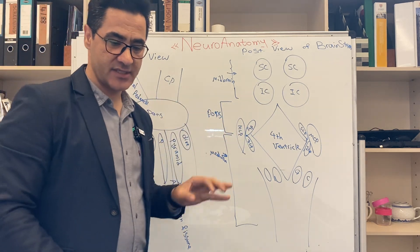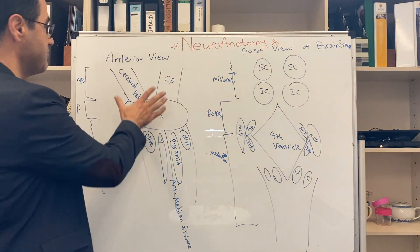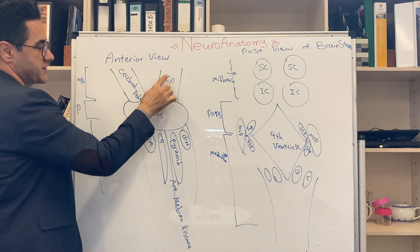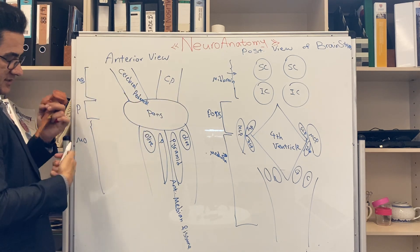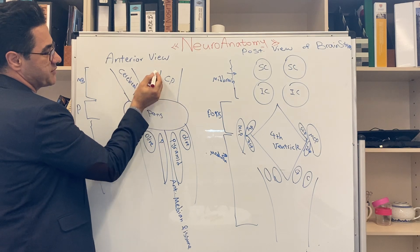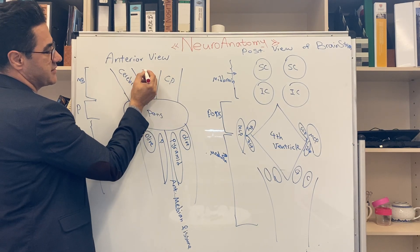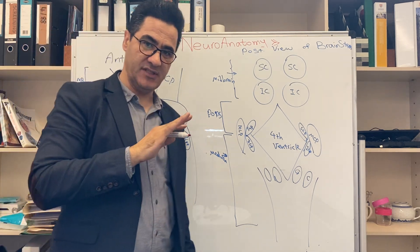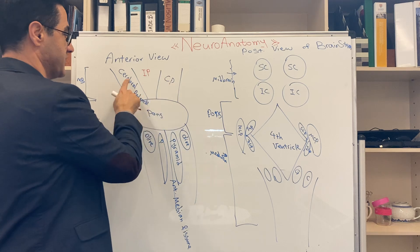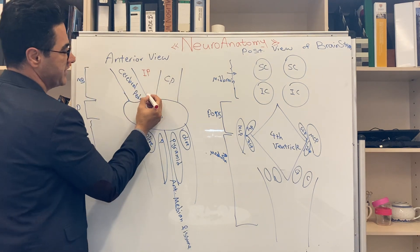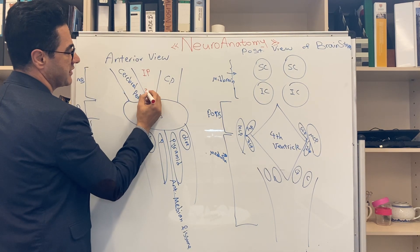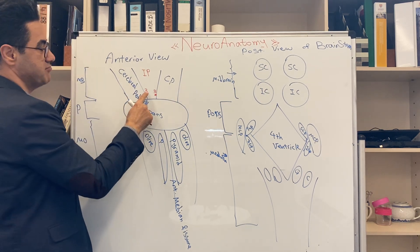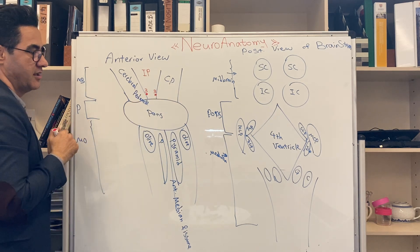This is the midbrain from the anterior view. We have two cerebral peduncles, and the space between them is called the interpeduncular fossa — 'inter' meaning between the two cerebral peduncles. Cranial nerve 3 is coming out of this interpeduncular fossa, just medial to the cerebral peduncle.